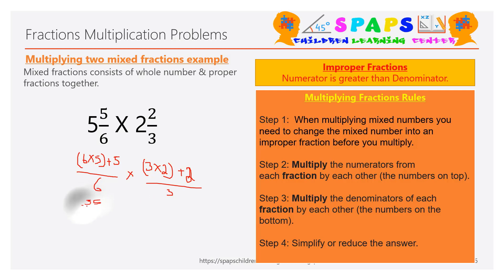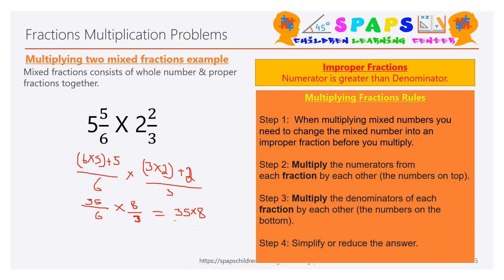Now multiply: thirty-five by six multiplied by eight by three. Before multiplying everything out, check if you can simplify across the fractions. Eight and eighteen — wait, six and eight share a common factor of two. Eight divided by two equals four, and six divided by two equals three. So now you have thirty-five by three multiplied by four.